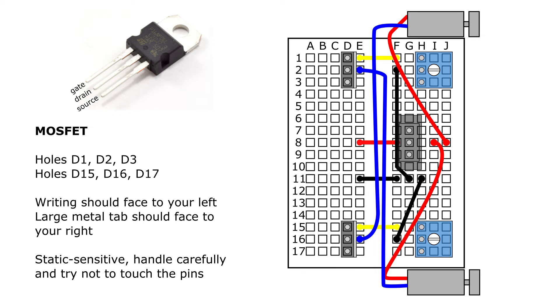Next, you're going to connect the two MOSFETs. These are a special type of transistor, so the T in that acronym stands for transistor. And you want to orient these so the writing on the front of them is facing to your left and the large metal tab is facing to your right. And these are a static sensitive part, so be careful not to touch the pins or shuffle your feet on carpet before you handle them. Put one of them into holes D1, D2, and D3, and the next one into holes D15, D16, and D17.